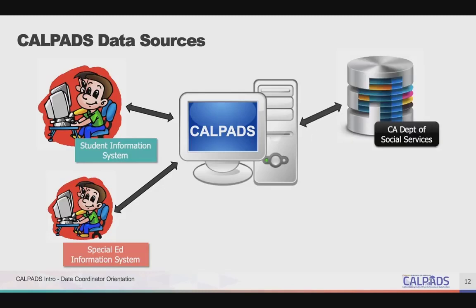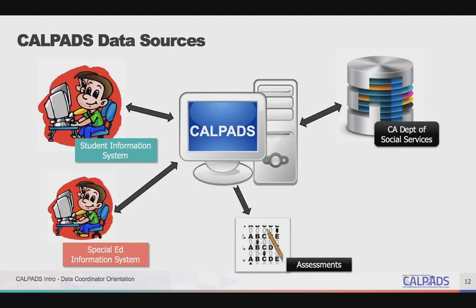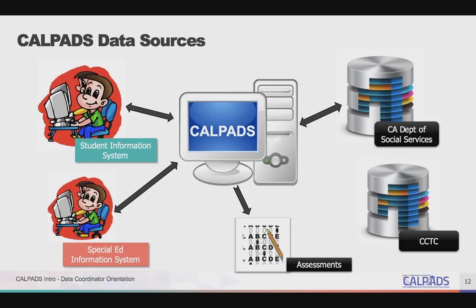Enrollment and demographic data are extracted from CALPADS and used to match the California Department of Social Services' CalFresh, CalWorks, and Medi-Cal systems to directly certify students as eligible for free and reduced-price meals, and also from the child welfare system case management system to identify foster youth. Data is also extracted from CALPADS during the assessment windows and loaded into the Testing Operations Management System, or TOMS, so students can be digitally assessed. Course and certificated staff data from CALPADS will be matched with the California Commission on Teacher Credentialing to identify potential misassignments.